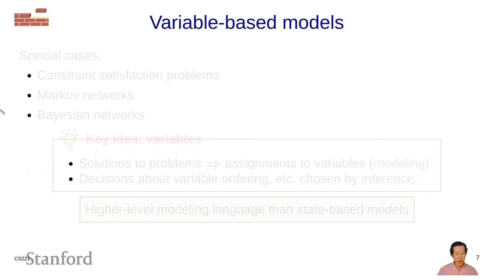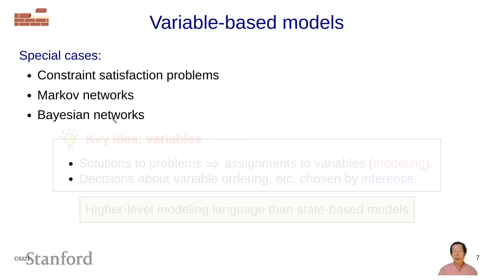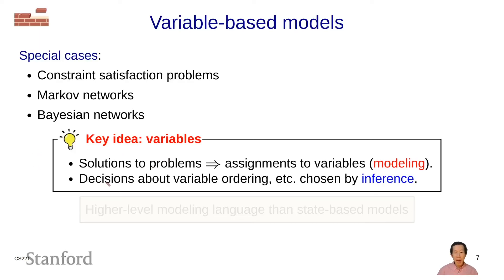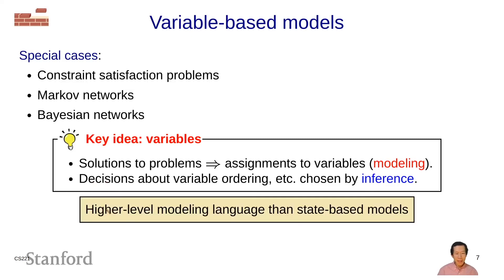Variable-based models allow us to capture these two additional pieces of structure. Variable-based models is an umbrella term that includes constraint satisfaction problems, Markov networks, and Bayesian networks, all of which we'll cover over the next few weeks. The key idea is to think in terms of variables, where a solution to a problem is simply an assignment to the variables. The decisions about ordering — which variables to set first — are chosen by the inference algorithm.